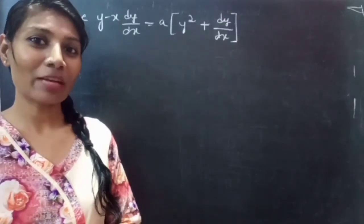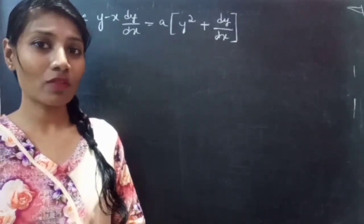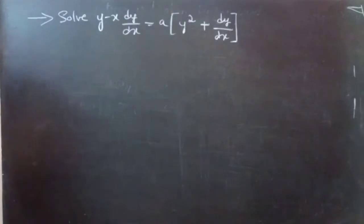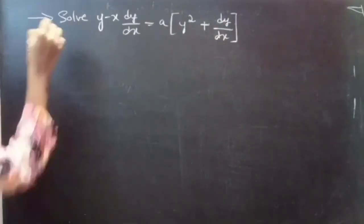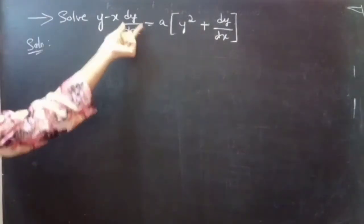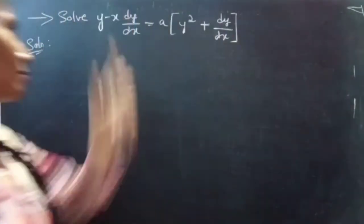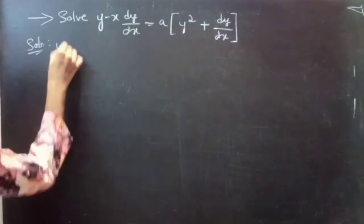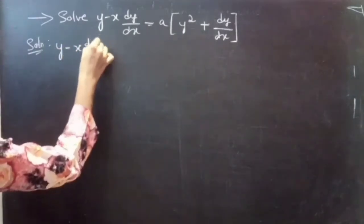Hello everyone, this is Yaya Kalpana here. In this video we are going to solve a problem on variable separable. We will solve: y minus x times dy/dx equals y times (y squared plus dy/dx). Consider the given differential equation.